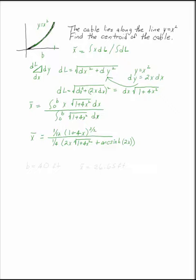On the other hand, if you want to look at whether this is a reasonable number, if you substitute b as say 40, 40 feet into this, you get x bar is 26.65 feet. And that is a very reasonable place to think about the center of gravity for this cable beam.